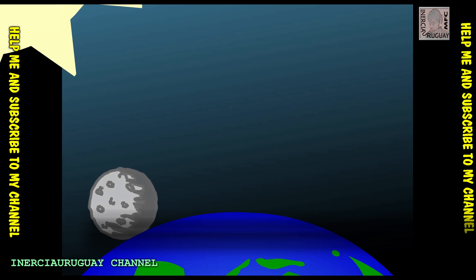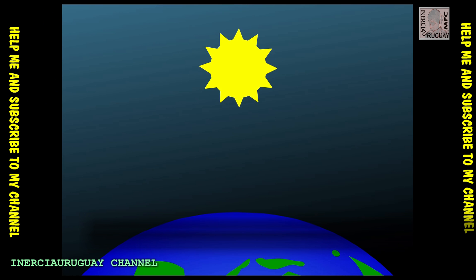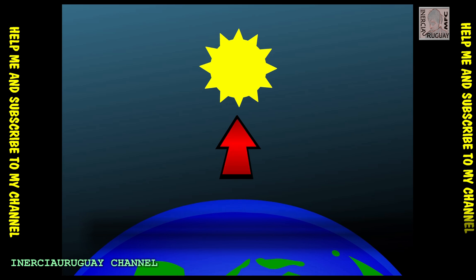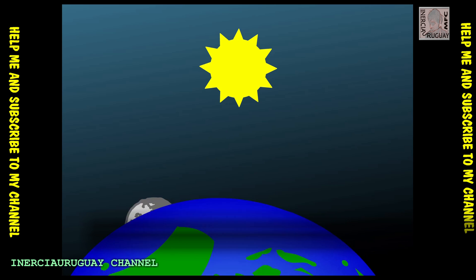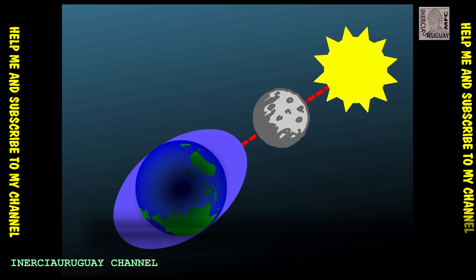What about the sun? It must also have a pull on the earth. The sun also pulls the earth, but its pull is weaker than the moon's because it's farther away. But when the sun and moon line up with the earth, they pull in the same direction, and that causes extra high and extra low tides.